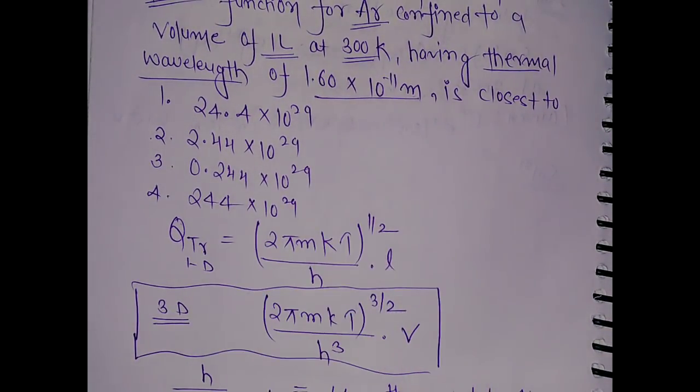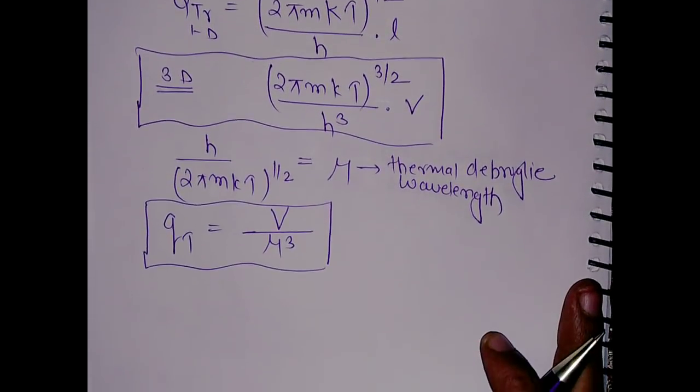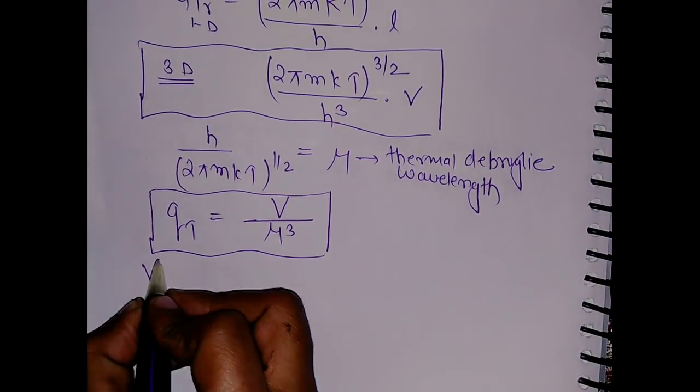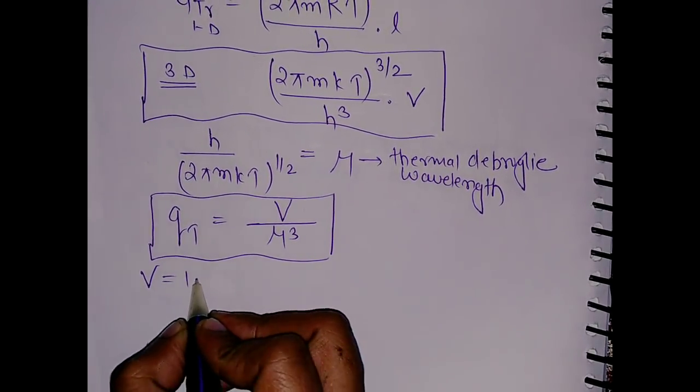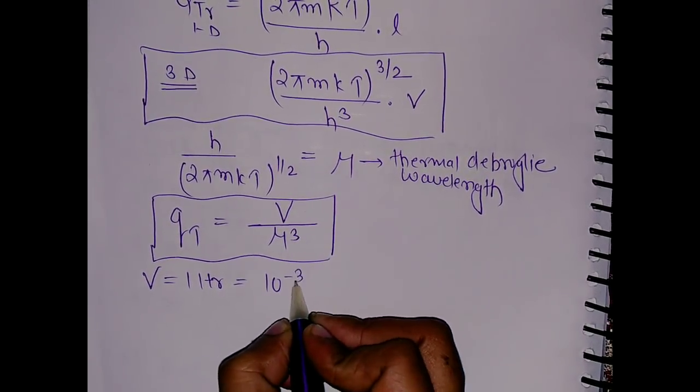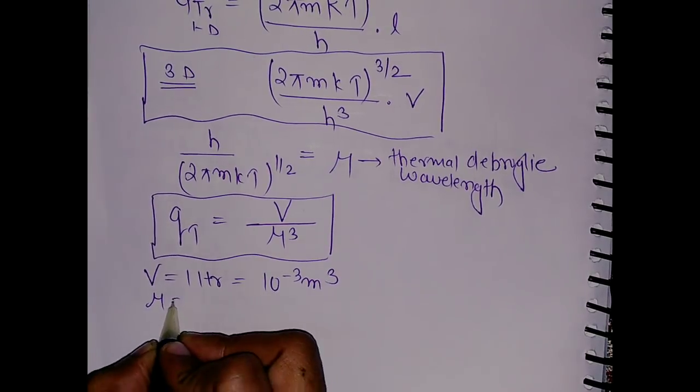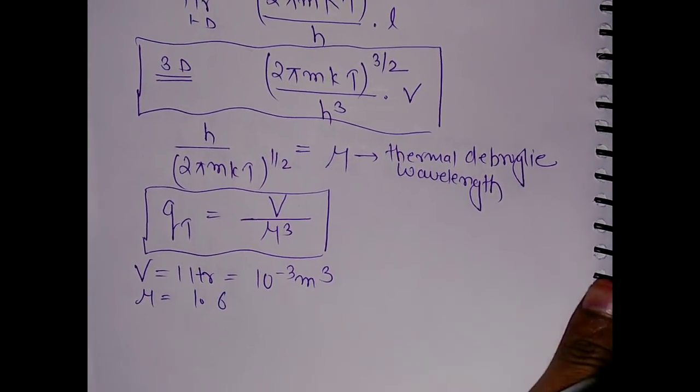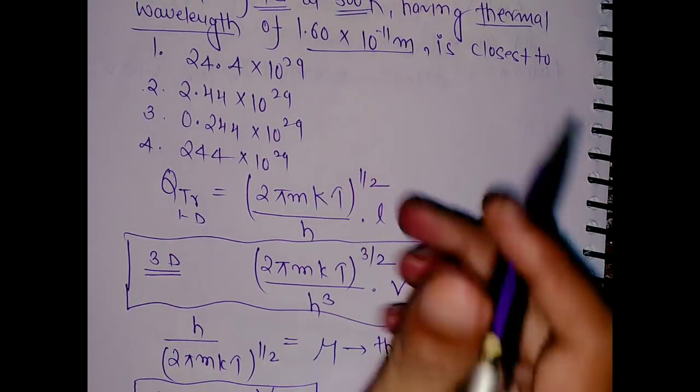The volume is given as 1 liter, which equals 10^-3 m³, and the de Broglie wavelength is 1.6 × 10^-11 m.